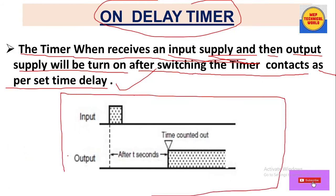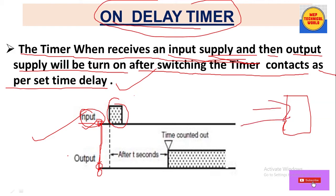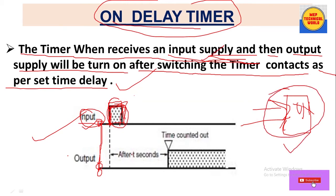Let's look at the timing diagram. Initially both input and output are zero. When we apply the input signal to the on delay timer, the graph goes high — that means input supply is applied. At that point, the timer starts counting as per the delay setting.